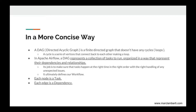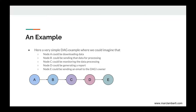Its job is to make sure that tasks happen at the right time, in the right order, with the right handling of any unexpected issues. It ultimately defines our workflow. Each node in a DAG is a task, and each edge is a dependency. For example, tasks are represented by nodes A, B, C, D, and E, and each edge represented by an arrow is a dependency between two tasks. The task D has to run successfully before the task E can run.